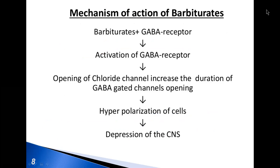Barbiturates act as positive allosteric modulators and at higher doses as agonists of GABA, or gamma-aminobutyric acid, receptors. GABA is the principal inhibitory neurotransmitter in the mammalian central nervous system. Barbiturates produce their pharmacological effects by increasing the duration of chloride ion channel opening at the GABA receptor, which increases the efficacy of GABA.